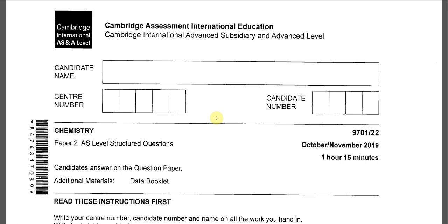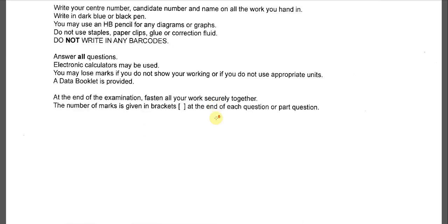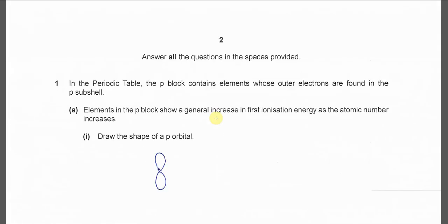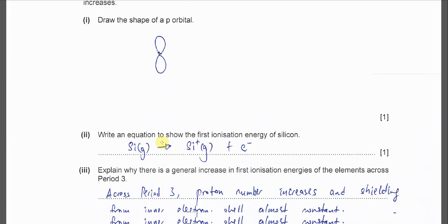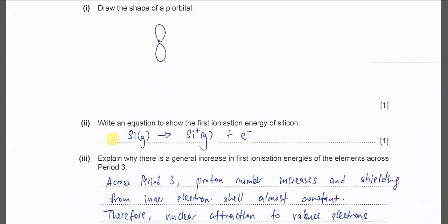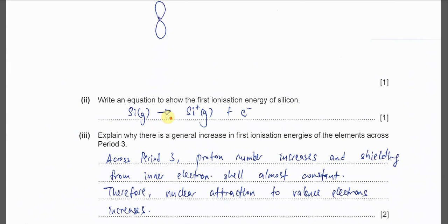October November 2019 paper 2 variant 2, question 1a part 1: Draw the shape of the p orbital. You just draw these two loops. Part 2: Write an equation to show the first ionization energy of silicon. It must be one mole of gaseous silicon atoms, and these gaseous atoms will release one electron, one mole of electrons, and form these gaseous ions with one positive charge. Must be all gases form.